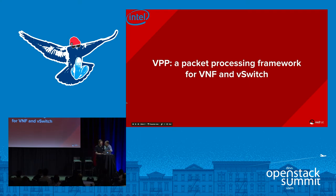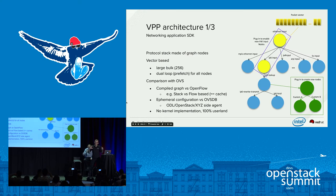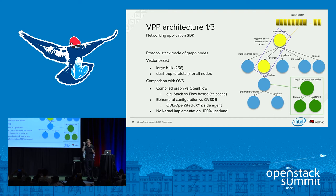Thank you, Uriel. So, what is VPP? VPP is a protocol stack made of graph nodes. To take an example — when we have an IPv6 packet coming in, we go into an Ethernet input, parse the header, that's IPv6, so we go to the IPv6 input node, then to the IPv6 lookup, find the exit route, and go to the node to transmit the packet.